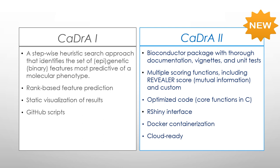In the first implementation of CADRA, it only supported rank-based scoring functions such as the KS test or weighted correlation test. It was only available as a top-level script downloadable from GitHub with minimal documentation, no CRAN or Bioconductor compliance structure, and dependencies had to be independently resolved and installed before one could install and use the package.